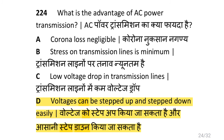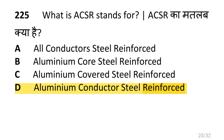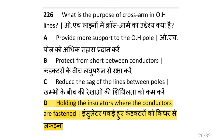What is the advantage of AC power transmission? That is voltage can be stepped up and stepped down easily. What does ACSR stand for? That is aluminum conductor steel reinforced. What is the purpose of cross arm in overhead lines? That is holding the insulators where the conductors are fastened.